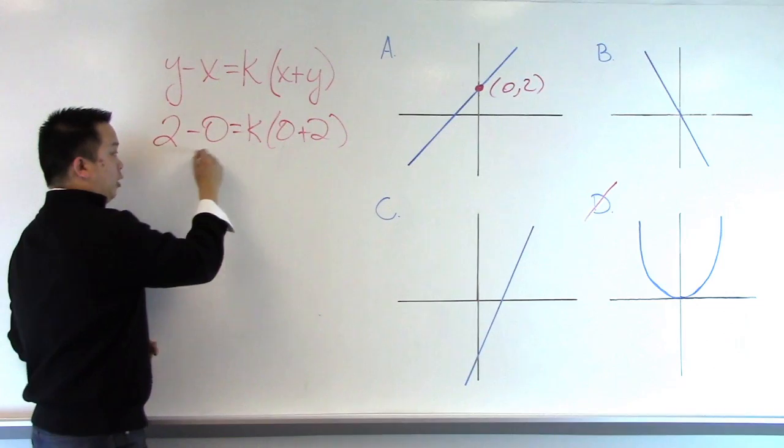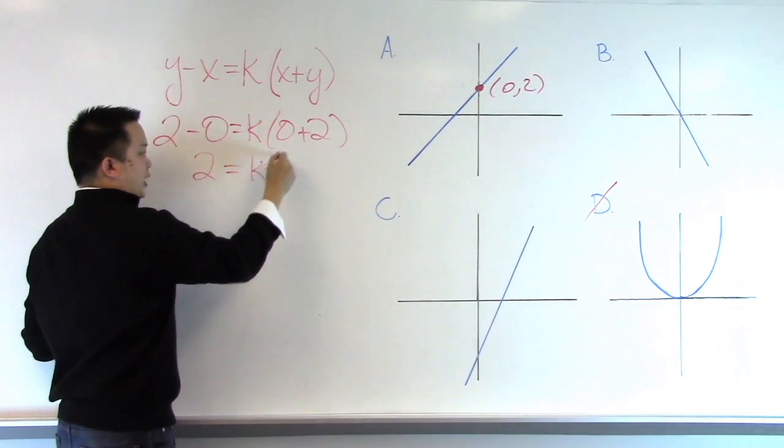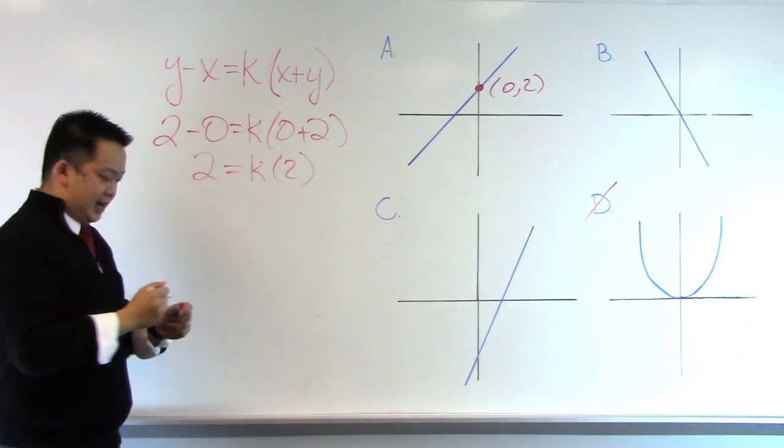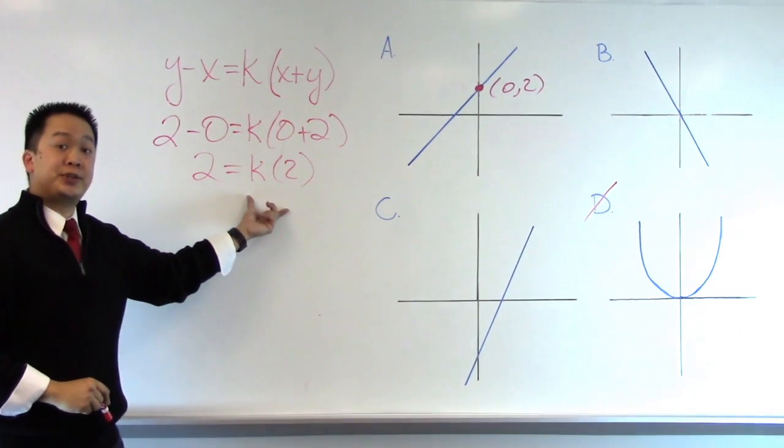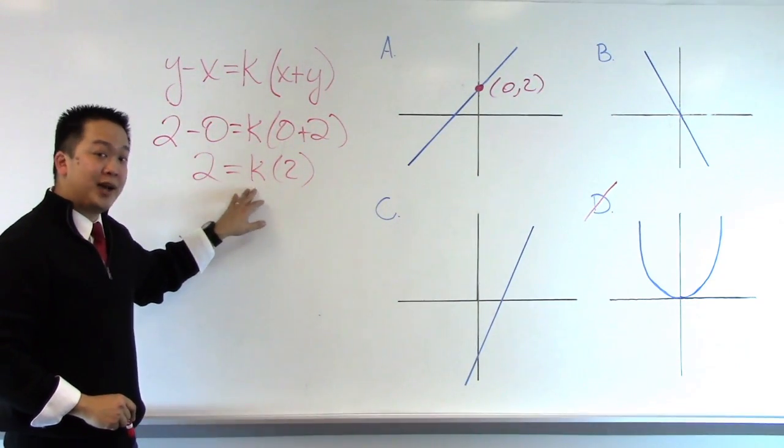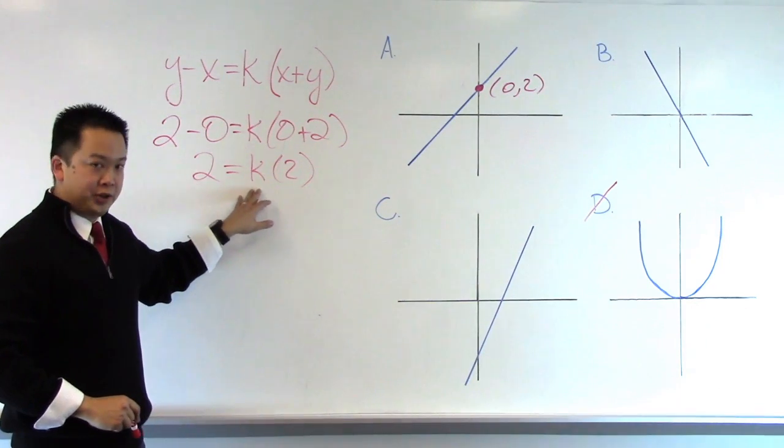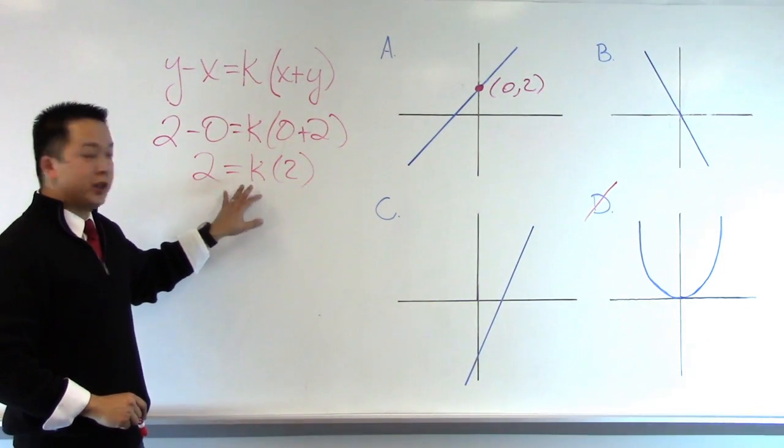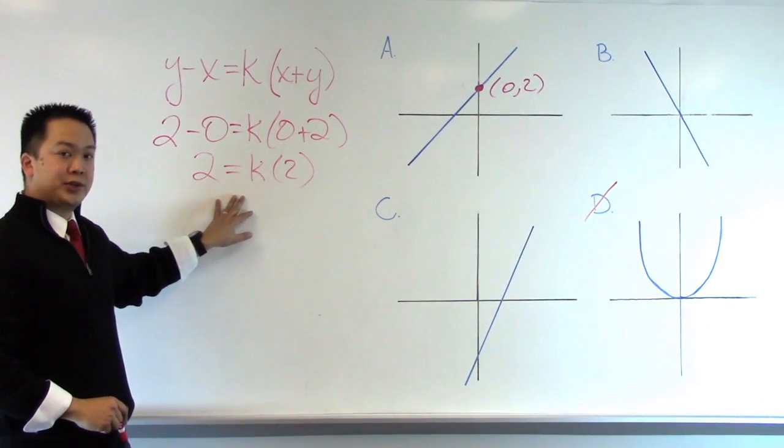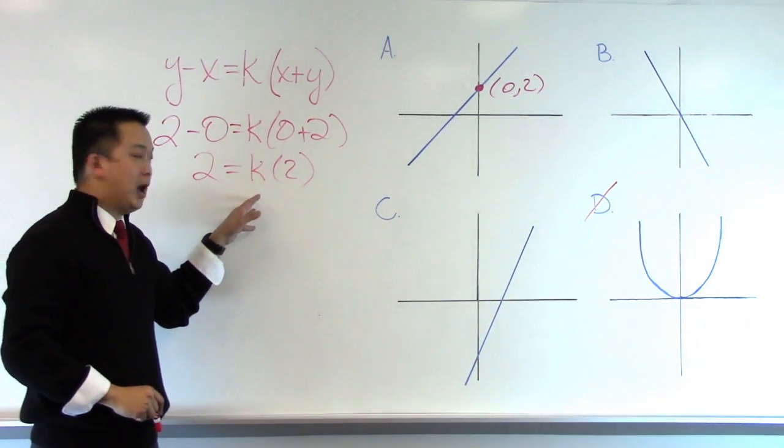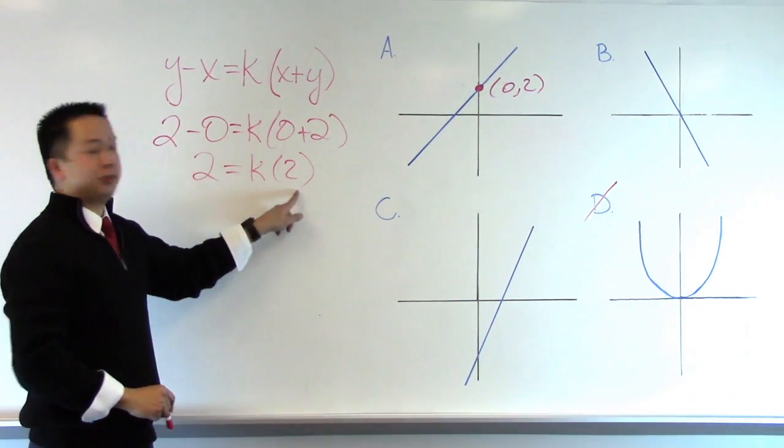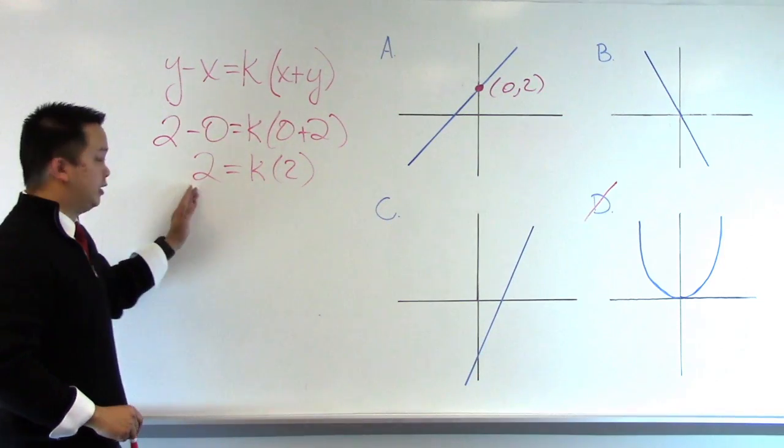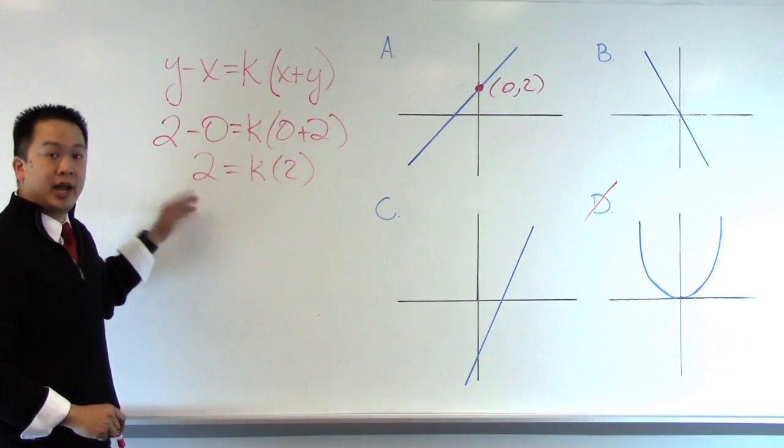Solving this down, we will get 2 is equal to k times 2. And at this stage, we must be very mindful of the hot words presented to us in the problem. The problem stated that k is a positive constant. It could be a fraction. It could be an integer. It doesn't matter. We know that it must be positive. So then we ask ourselves, is there any possible number that's positive and not 1 that when you multiply it to 2, you actually get back a 2. And there isn't one.